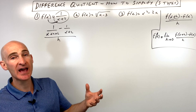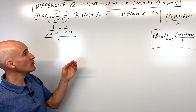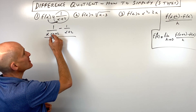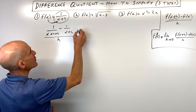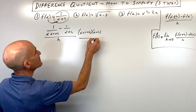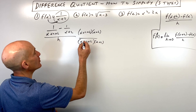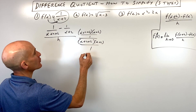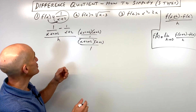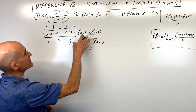The question students often have is: where do I go from here? We've got a complex fraction — fractions within a fraction. We have to clear the denominators. So we multiply the numerator by x plus h plus two times x plus two, and the denominator by x plus h plus two times x plus two.